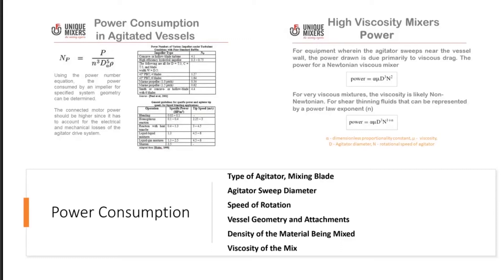There are ways and means to estimate power consumption. Estimating power consumption in the case of liquids is fairly simple and well studied — using the power number equation, you can actually estimate the power required for mixing. When it comes to solid blending applications or high viscosity mixers, calculating the power can be an extremely complex exercise, and in such cases the power is estimated based on empirical guidelines and experience from trials conducted at lower, pilot, or lab scales.